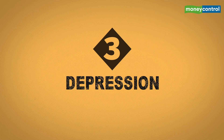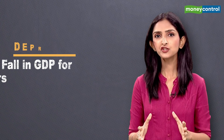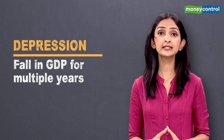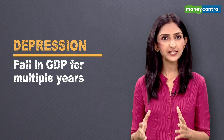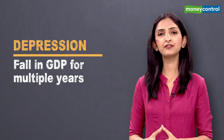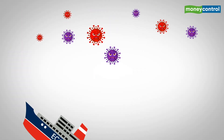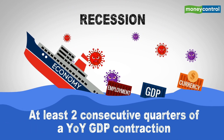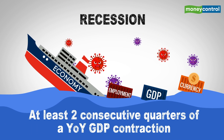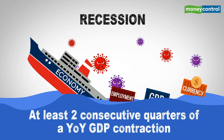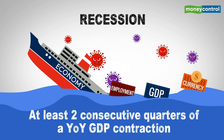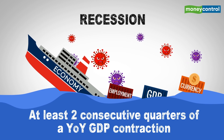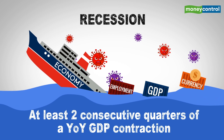Number three is depression. A fall in GDP for multiple years is termed a depression. A recession is commonly defined as at least two consecutive quarters of year-on-year contraction in GDP, such as the one India experienced in the second and third quarters of 2020 following a nationwide lockdown.